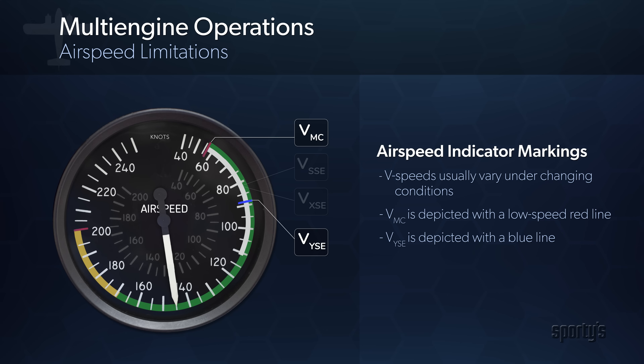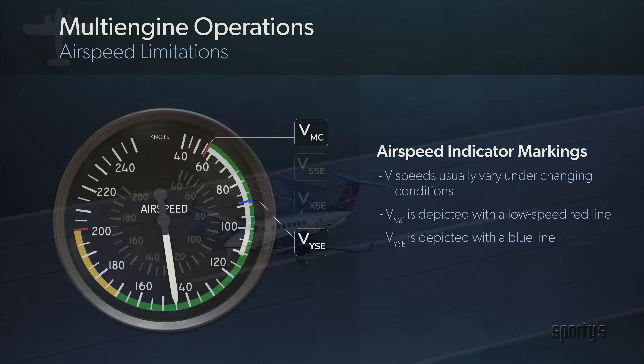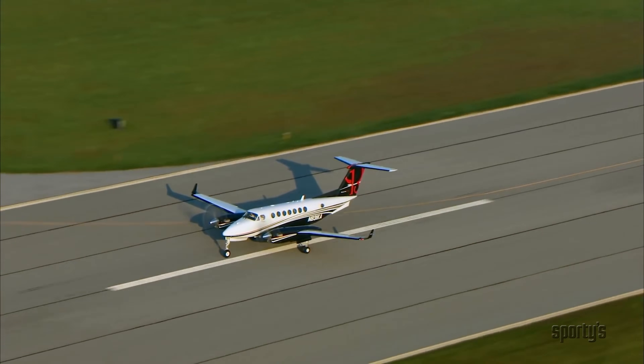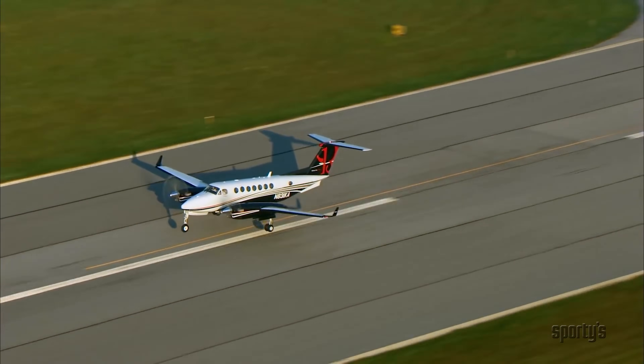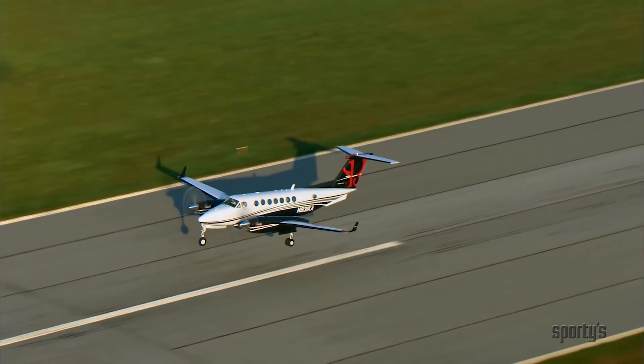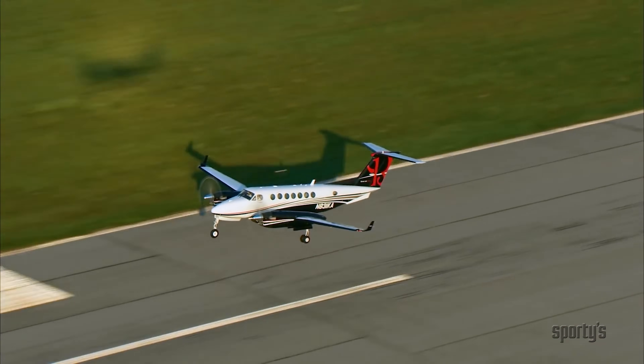VMC is the low-speed red line. VYSE is the blue line. There are two other V-speeds you will find in larger twin-engine turboprops and jets: V1 and V2.